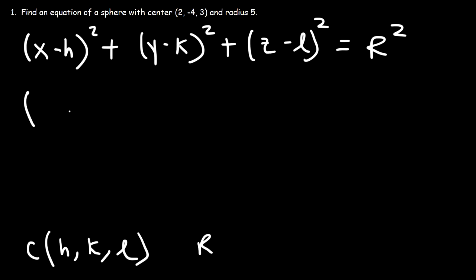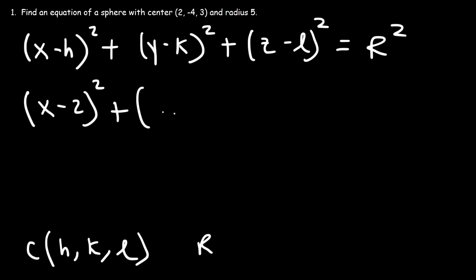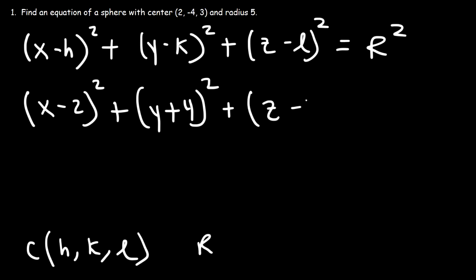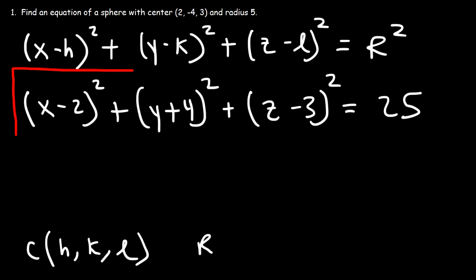In this example, we can see that h is 2, k is negative 4, so we have y minus negative 4, which we can write as y plus 4, and finally z is 3, so this is going to be plus z minus 3 squared. The radius is 5, so 5 squared is 25. And that's how you can write the equation of a sphere given the center and the radius.